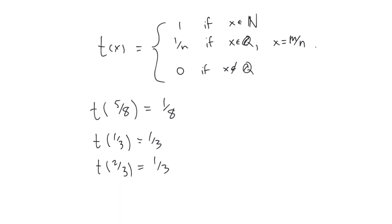If the number is already a natural number, the first case follows from the second case — when you write the reduced fraction, the denominator is one, so you get one. And if it's irrational, you can't write it as a fraction at all, so you give it the value zero.